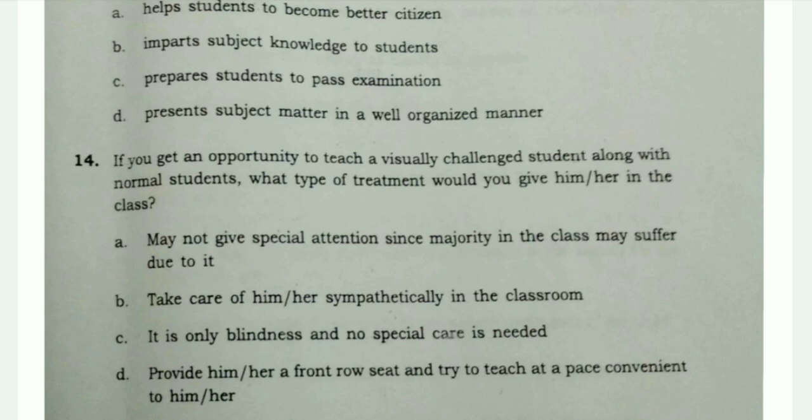The correct answer is option D: provide him or her a front row seat and try to teach in a place convenient to them. You will make the partially blind child sit in the front row so that they can see the blackboard to some extent, and adjust your teaching speed accordingly.